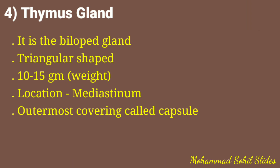The outermost covering of the thymus is the capsule, composed of thin connective tissue. The inner foldings, called trabeculae, divide each lobe into lobules. The central area is called the medulla, and the peripheral area near the capsule is called the cortex — a darker area where numerous lymphocytes are present.